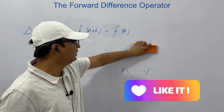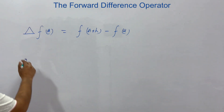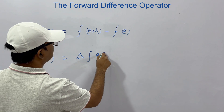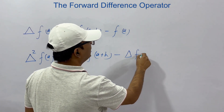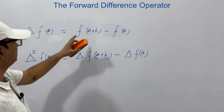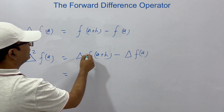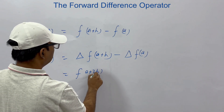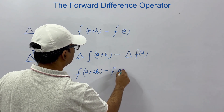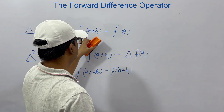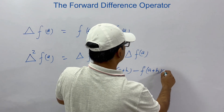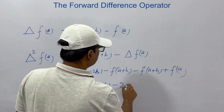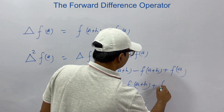Now the second degree operator, del², on similar terms, this was del of f(a+h) minus del of f(a). We can write this as: del f(a+h) was f(a+2h) minus f(a+h), and del f(a) was f(a+h) minus f(a). So what we get is f(a+2h) minus 2·f(a+h) plus f(a).